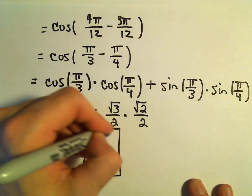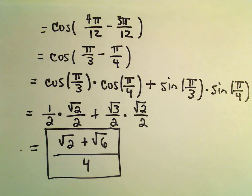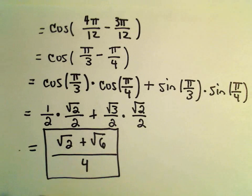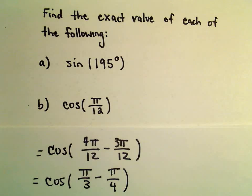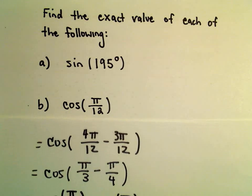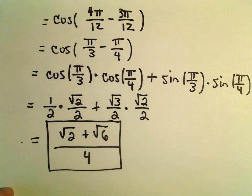So again, we've just simply used this difference identity for cosine to evaluate a trig function, to evaluate cosine of pi over 12. Again, that's one I certainly don't have memorized off the top of my head. But I can deduce it without too much effort, so long as I remember that identity.